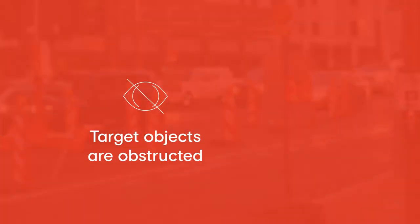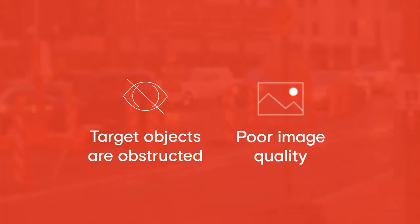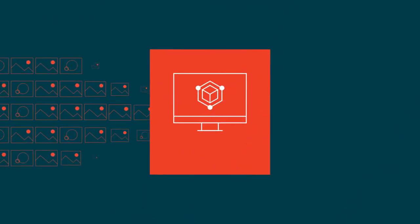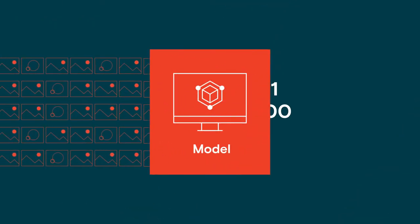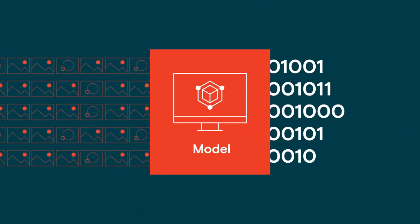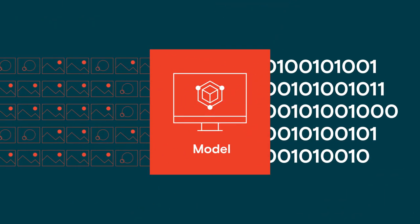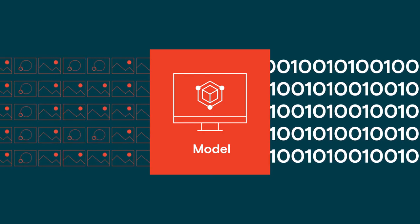Image annotation is challenging, especially when target objects are obstructed or if the image quality isn't great. To solve these challenges, government agencies rely on large amounts of image examples to accurately train their models.